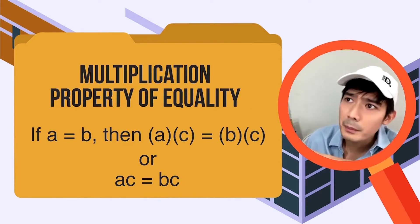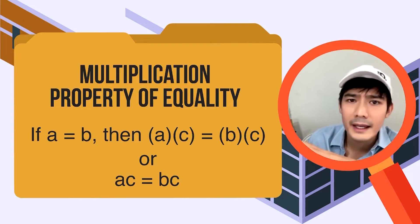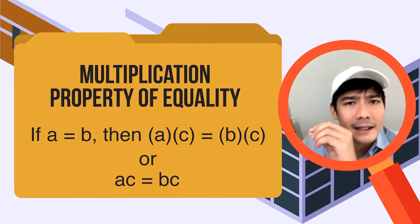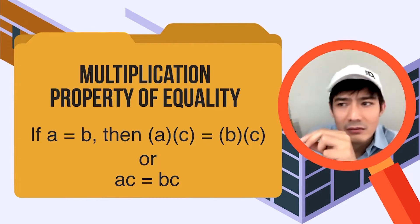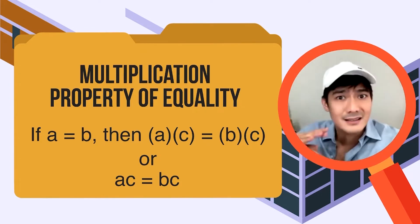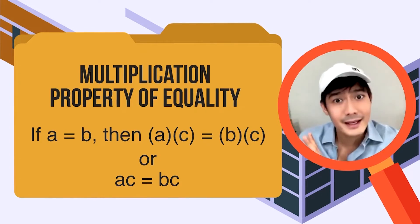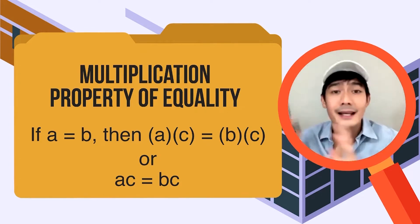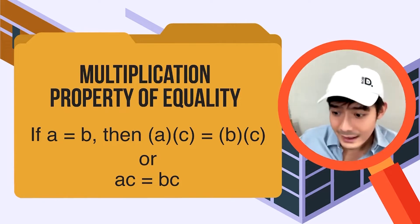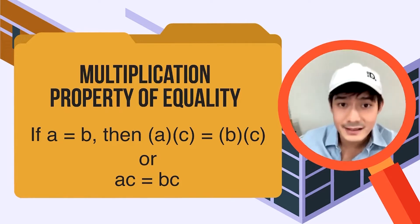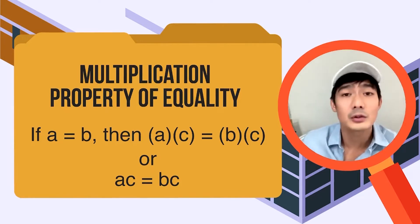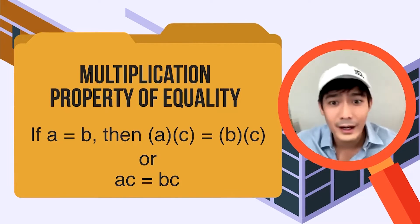Kuya Robbie, kailangan ba bang maglagay ng multiplication sign — yung parang x? Pwede, pwede rin hindi. Pwede rin magkatabi lang sila: AC is equal to BC. Pareho lang yan.